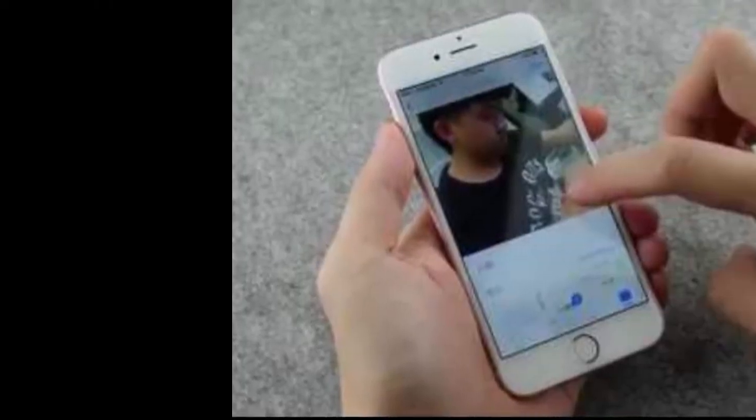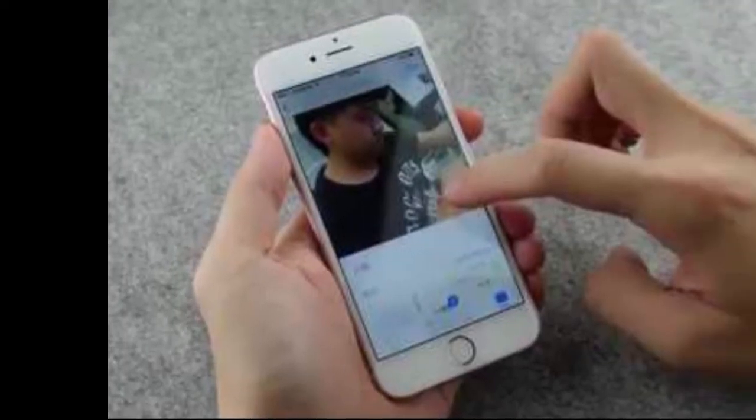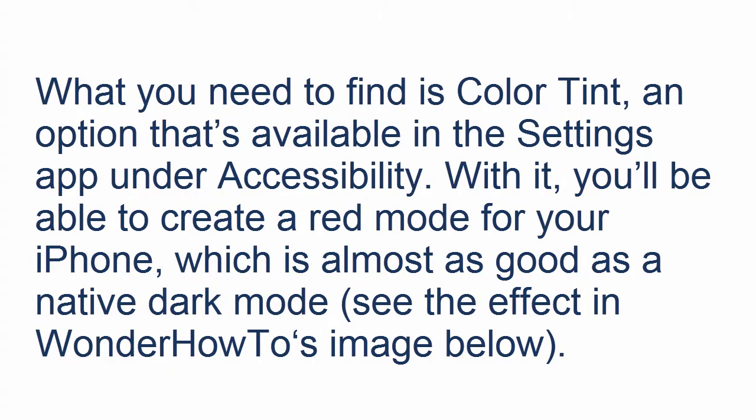You can switch it on whenever a darker iOS experience is needed. What you will need to find is Color Tint, an option available in the Settings app under Accessibility. With it, you will be able to create a red mode for your iPhone, which is almost as good as a native dark mode.